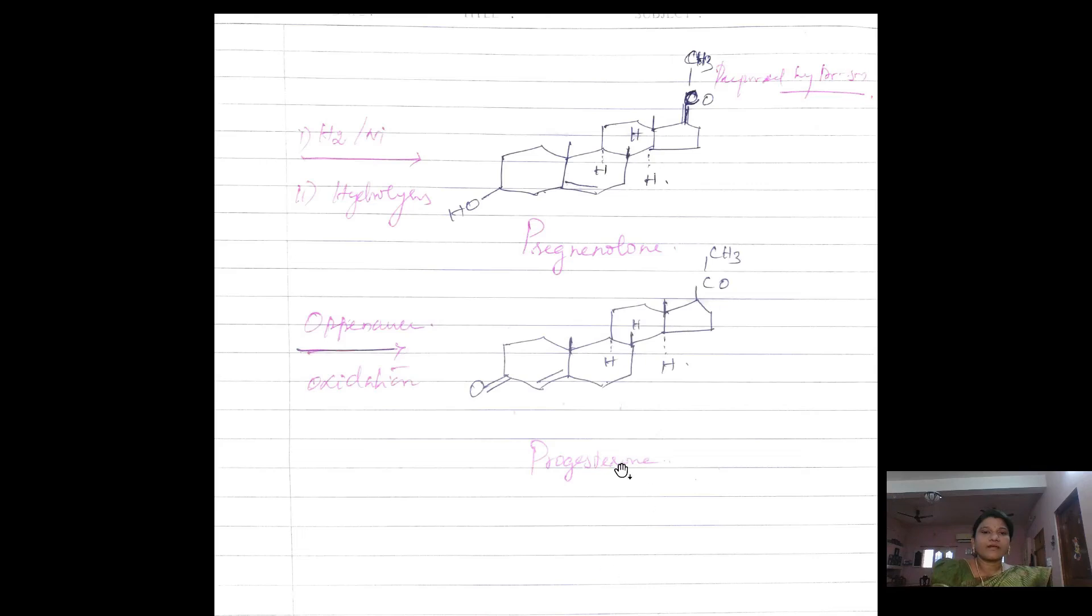The keto group forms a cyanohydrin. Further on treatment with phosphoryl chloride, it is converted into cyanohormone, and further on methylation with methyl magnesium bromide and reduction with catalytic reduction yields pregnenolone as the product.